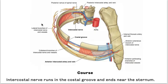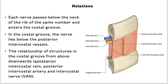Here is the typical intercostal nerve. The intercostal nerve runs in the costal groove and ends at the sternum. Each nerve passes below the neck of the rib of the same number and enters into the costal groove. In the costal groove, the nerve lies posterior to the intercostal vessels. The relationship of the structures in the costal groove from above downwards are: posterior intercostal vein, posterior intercostal artery, and the intercostal nerve.